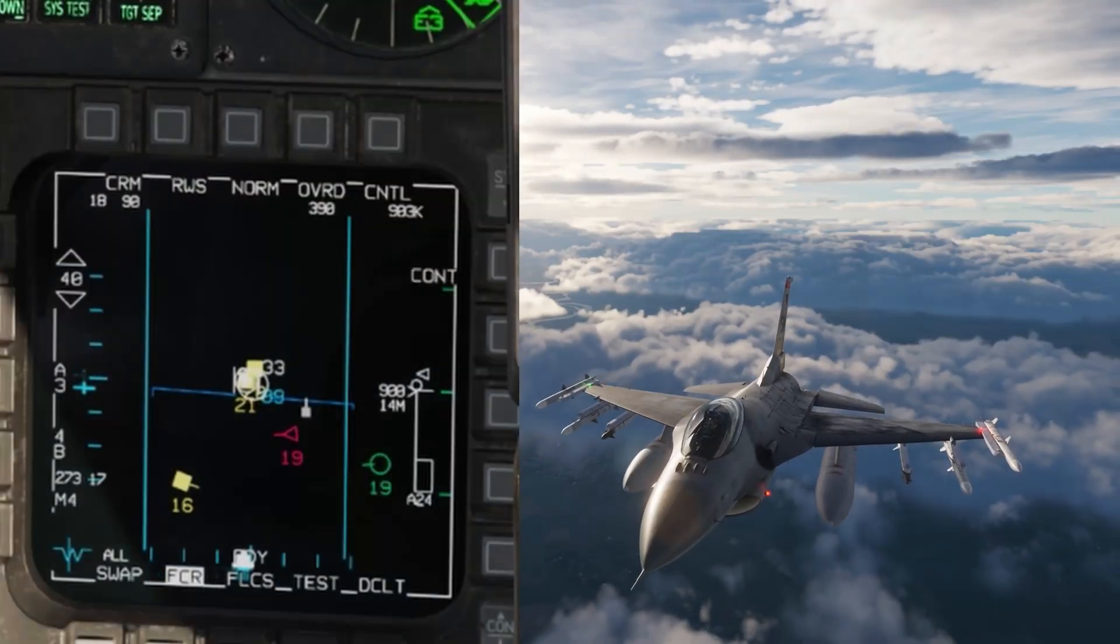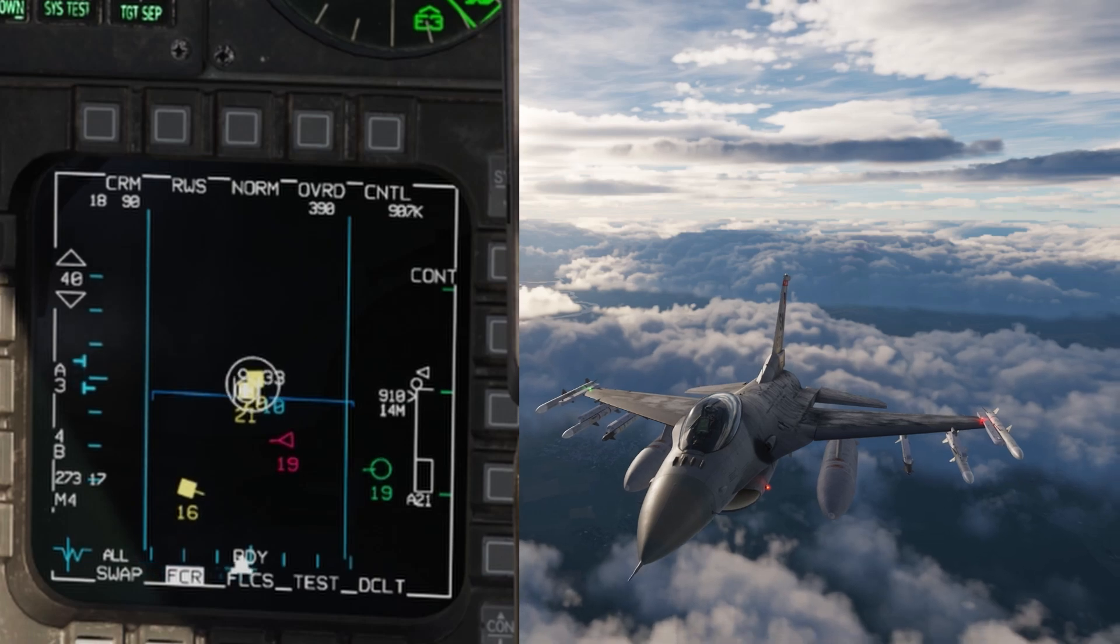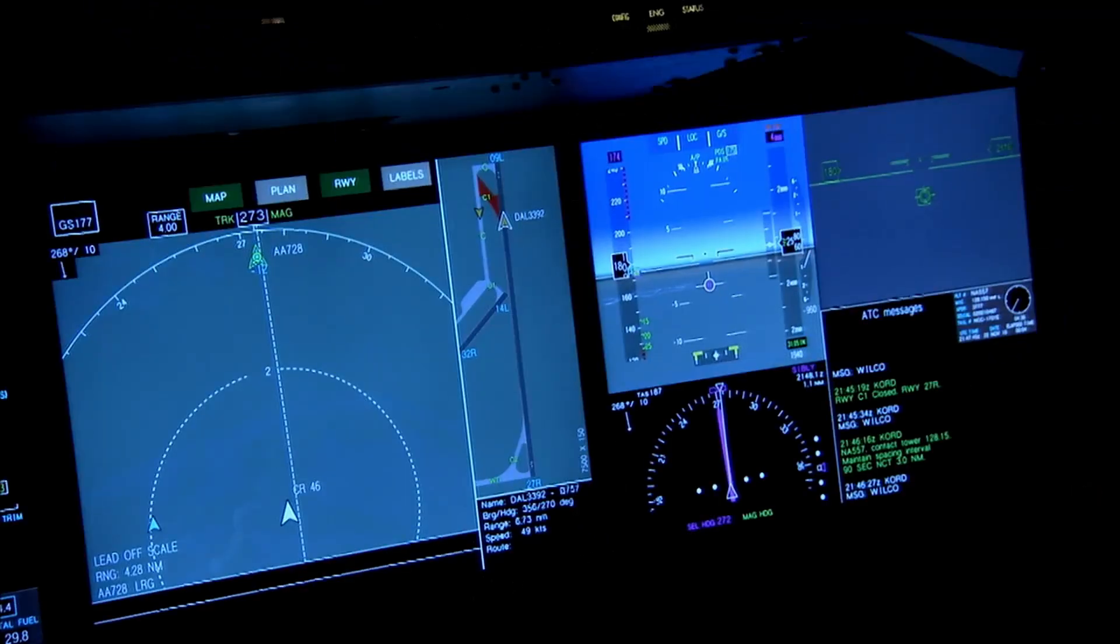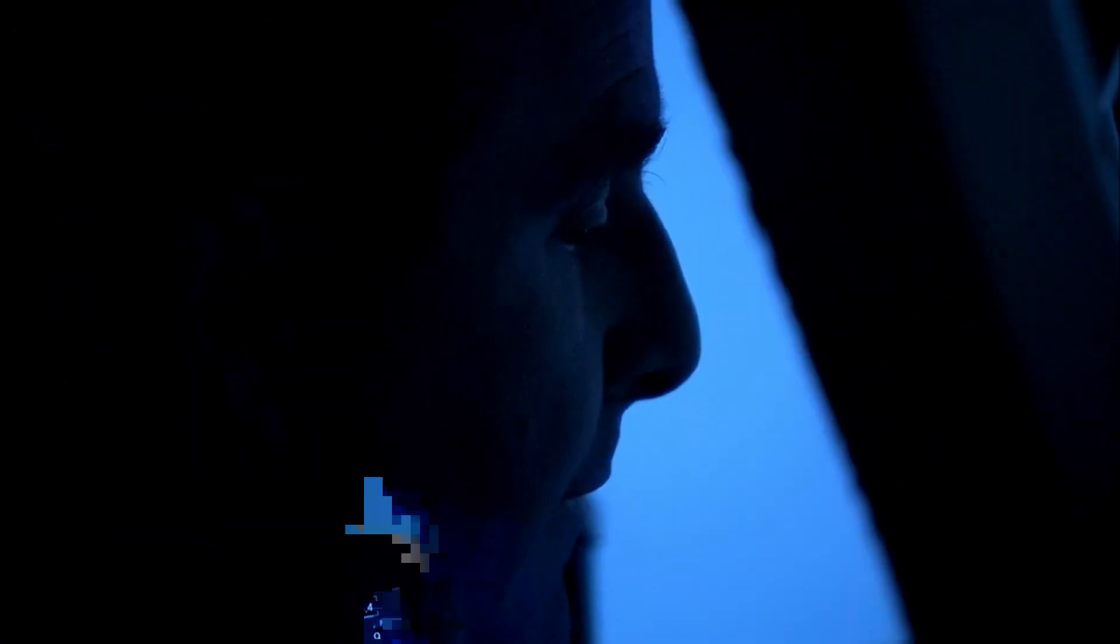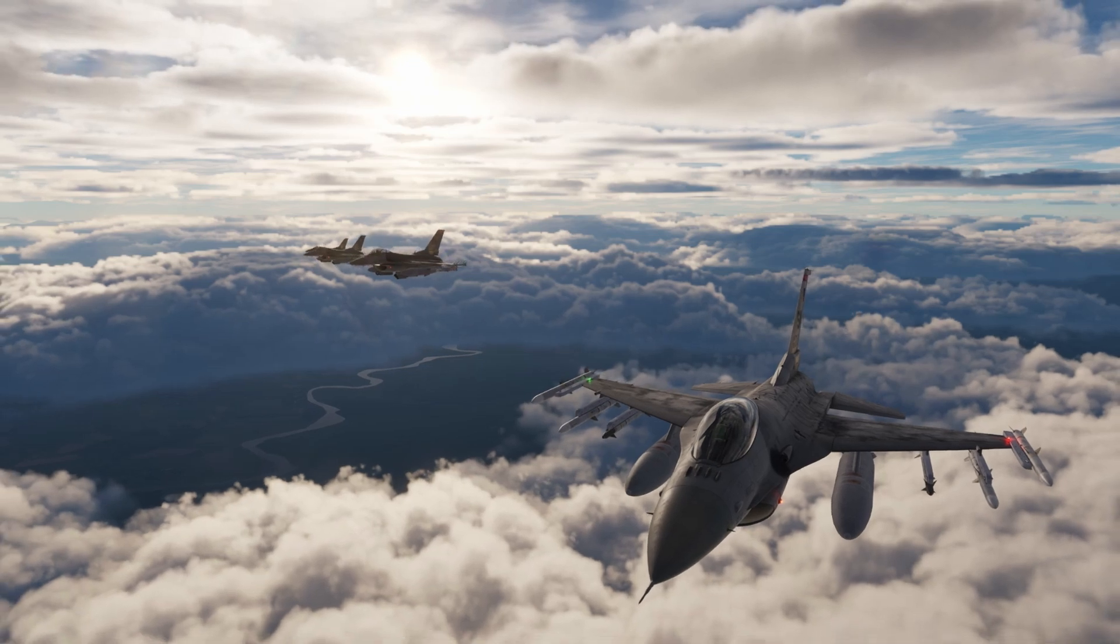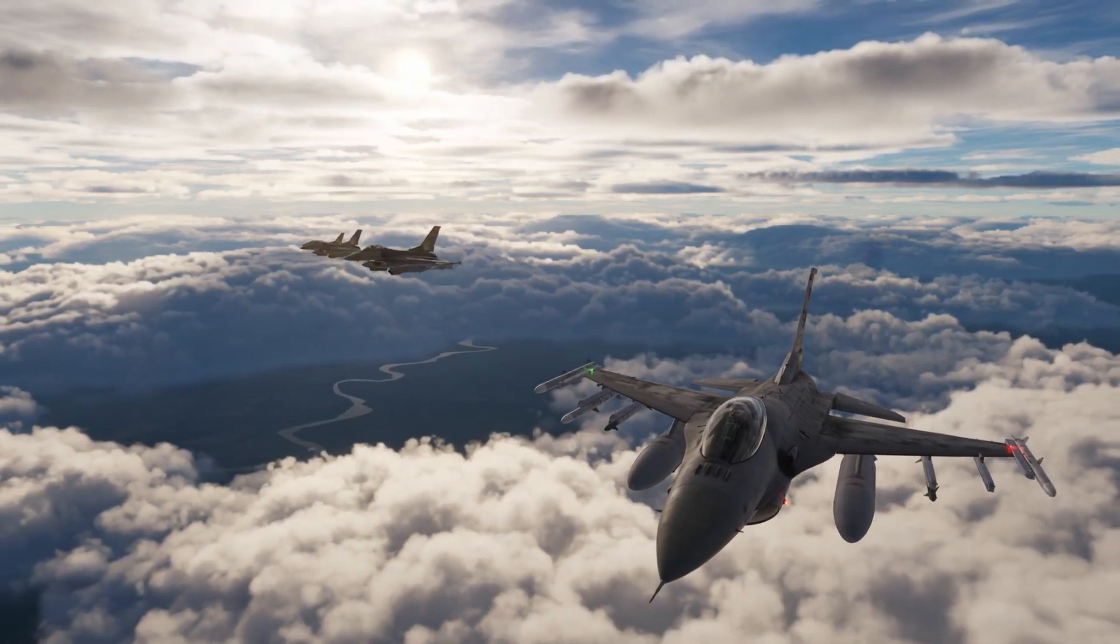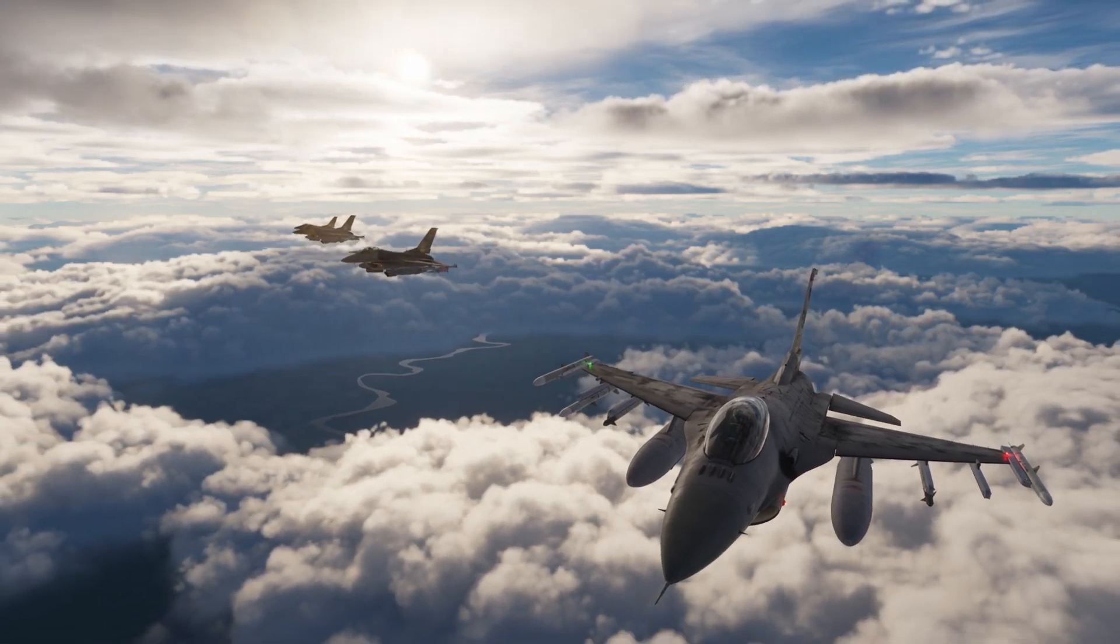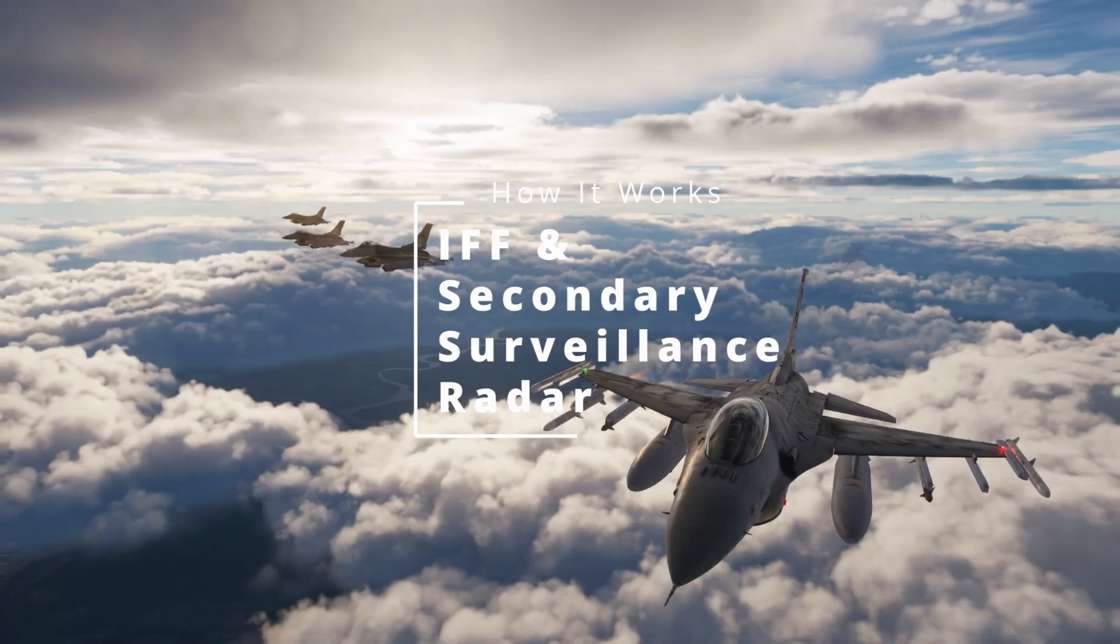Military pilots identify a radar contact as an ally using IFF, which is short for identification friend or foe. Civil pilots use a system of transponders to let air traffic controllers know where they are. This is called secondary surveillance radar. But did you know these two seemingly different systems are the exact same thing? How did civil and military aviation end up using the same system for what on the surface looks like two very different applications? Keep watching and we'll answer that question.